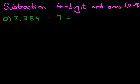Now the first stage is we're going to rewrite this question in the vertical format. Let's go over here. 7,384 minus 9.